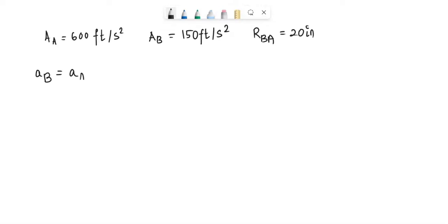AB will be equal to AA plus alpha·RBA plus W×(W×RBA). We can consider this as equation number 1.